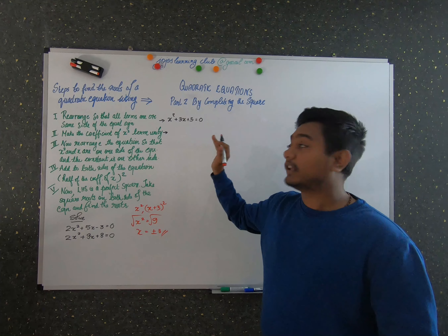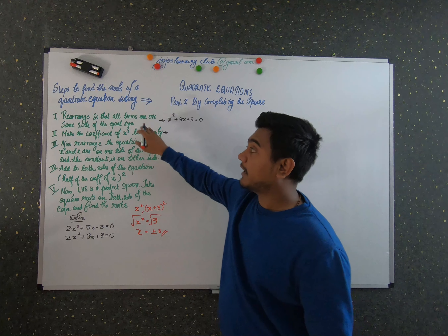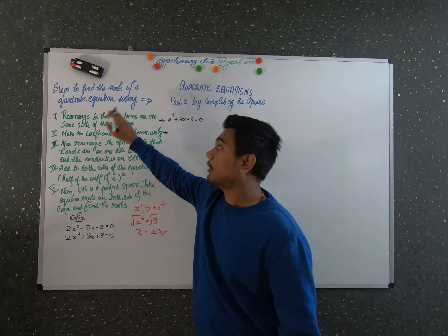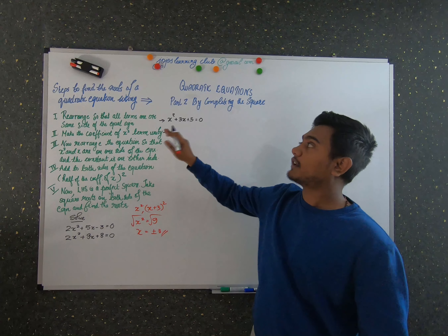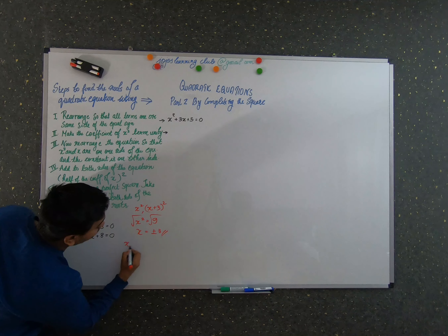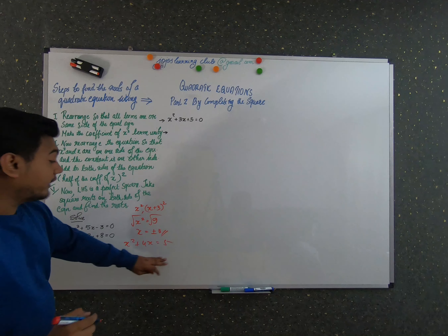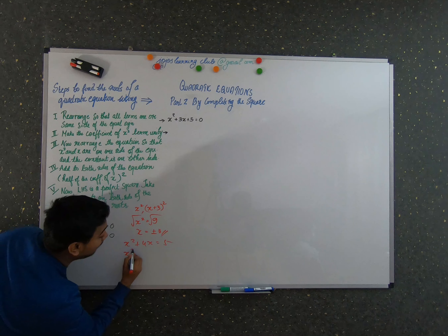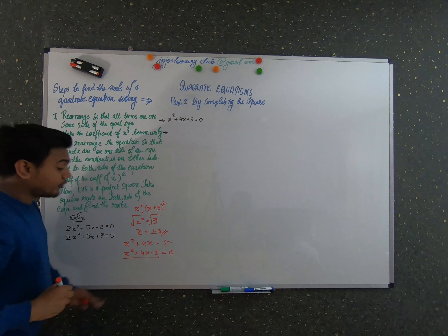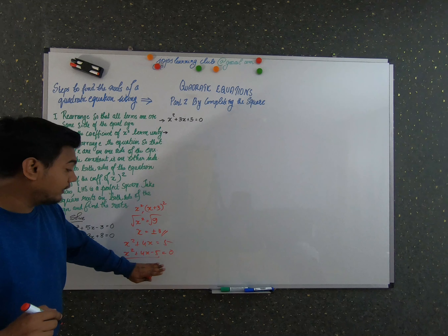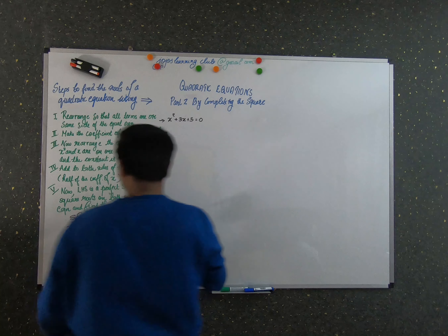First, let me read all these steps. The first step is to rearrange the quadratic equation so that all terms are on the same side of the equation. For example, if you have an equation such as x squared plus 4x equals 5, you rearrange it so all numbers and expressions are on one side of the equation.